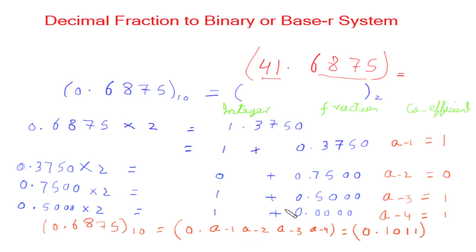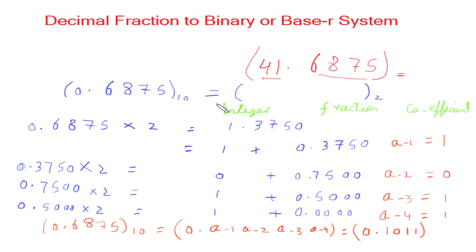To convert a decimal fraction to base r, a similar procedure is used. Since we converted to base 2 (binary) we multiplied by 2. If we need to convert to base 3 (ternary) we multiply by 3; if base 4 we multiply by 4; if base 5 we multiply by 5. The process is the same — multiplication is by r instead of 2. Now let's take an example of converting a decimal fraction to octal.